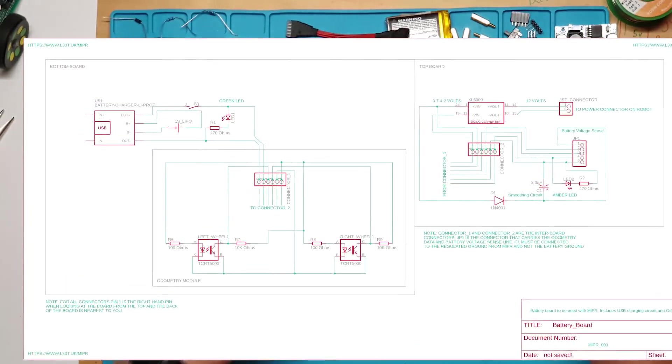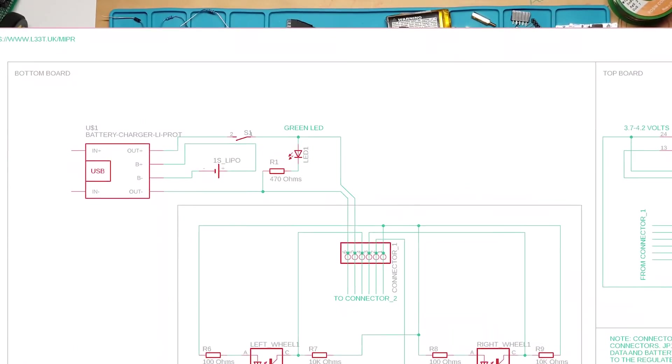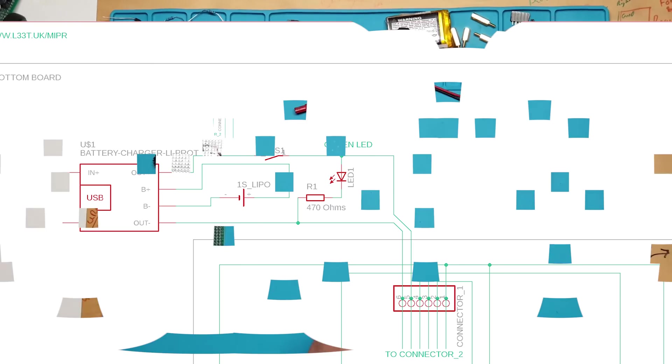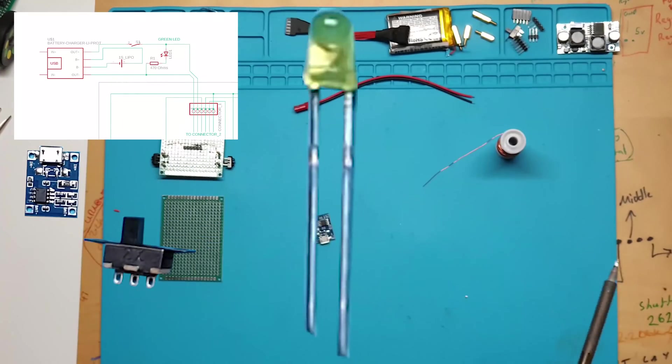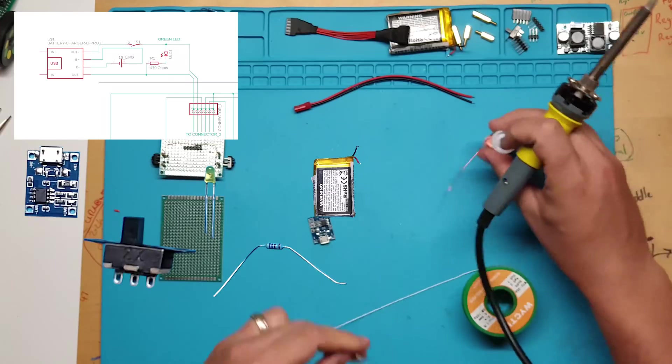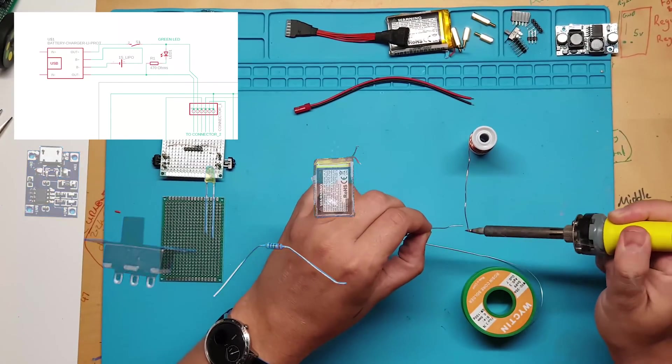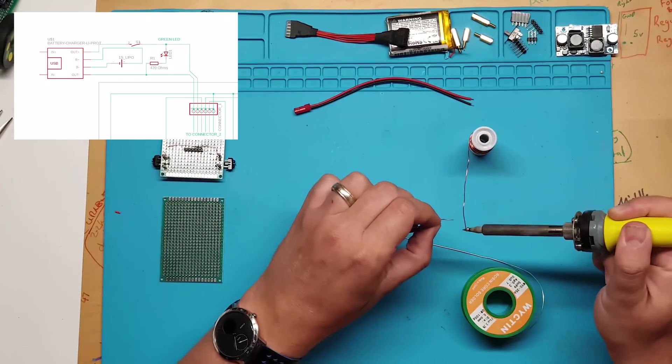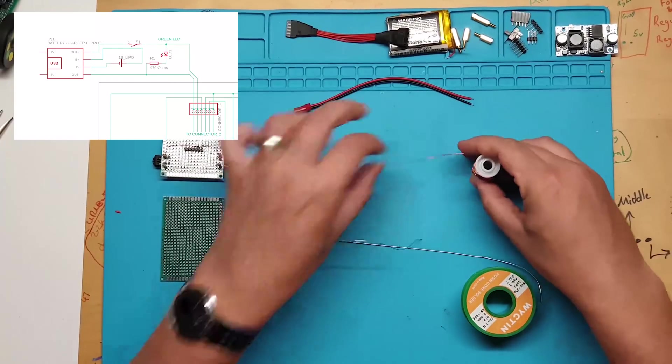To start with we will make the bottom board, this is what we're going to concentrate on for now. We will have the battery charger, switch, LED, resistor and battery. Then we will connect these components together into the inter-board connector. Once we have done this we will build the top board.